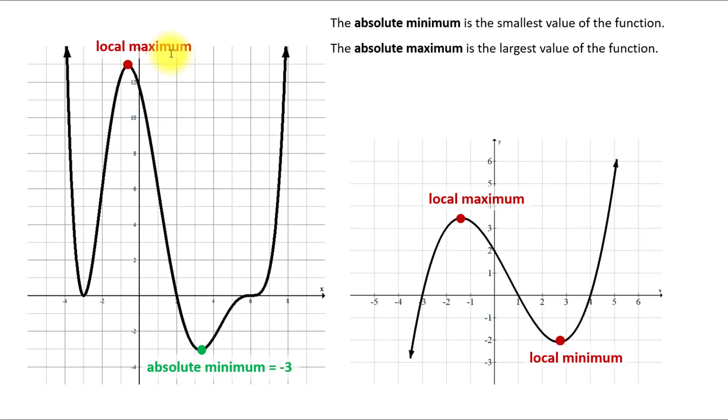Despite that, every local maximum point and local minimum point will correspond to a certain function value. Looks like in this case local maximum equals 13. This local maximum equals about 3.5 and this local minimum equals negative 2.